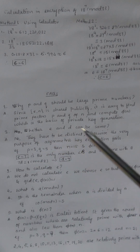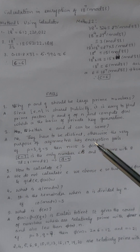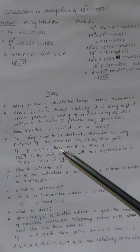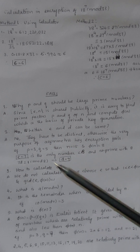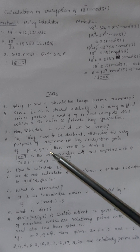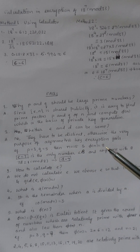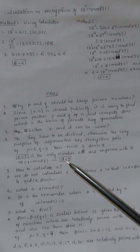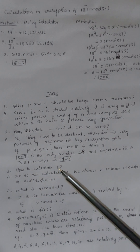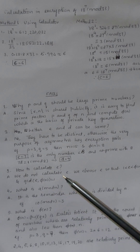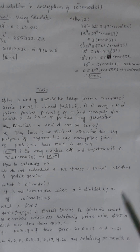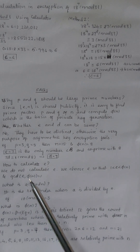Can E and D be the same? No — they must be distinct; otherwise, the purpose of asymmetric key encryption fails, as it would become symmetric key encryption. For example, if p = 3 and q = 5, then n = 15, phi(n) = 8; if you choose E as 7, then D also results in 7, making public and private keys the same. Regarding how to choose E: we do not calculate E but choose it such that 1 < E < phi(n) and it is coprime with phi(n).